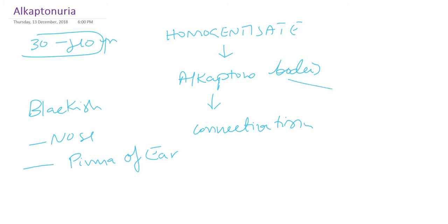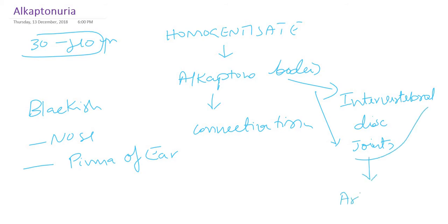These alkapton bodies can also deposit in the intervertebral discs — the space between the vertebrae — and in the joints. Because of this, patients may suffer from arthritis later in life. So it is not a fatal disease, but mothers may find it scary due to blackish deposition in the undergarments. Later in life, they may have backache, joint pain, or visible blackish colorization around the nose or earlobe.